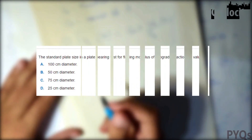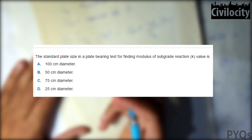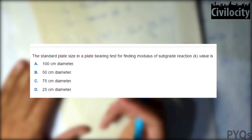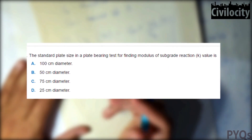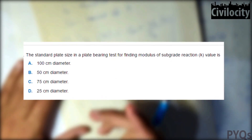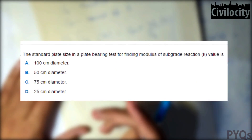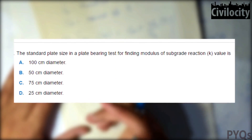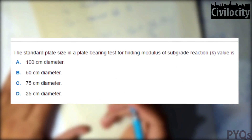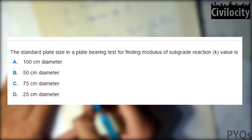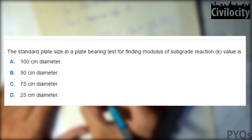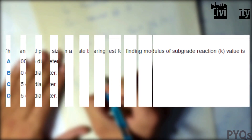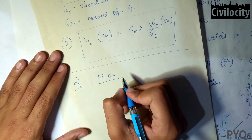Our first question is: the standard plate size in a plate bearing test for finding modulus of subgrade reaction, and the standard plate size in a CBR test. There are two plates — 30 centimeter and 75 centimeter — and the 75 centimeter plate is the standard plate.